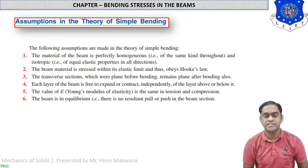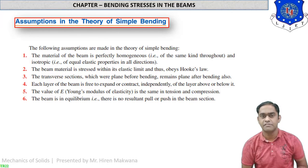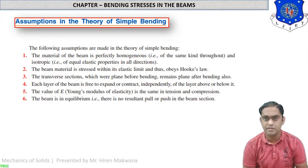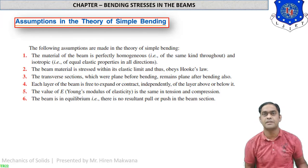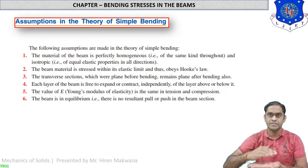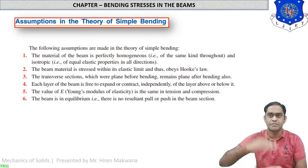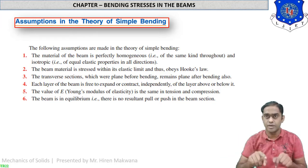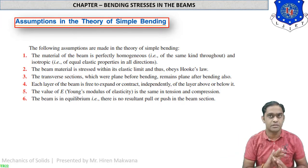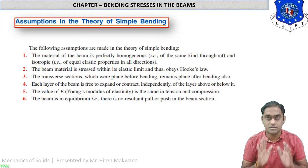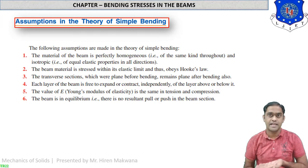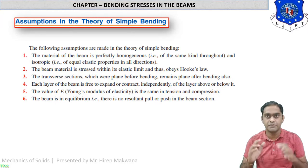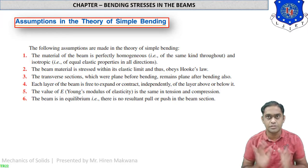Number 3: the transverse sections which were plane before bending remain plane after bending also. The beam is made up of layer by layer. Due to bending, the layers of the beam are not disturbed. The last layer will remain the last layer and the first layer will remain the first layer — before bending and after bending also.